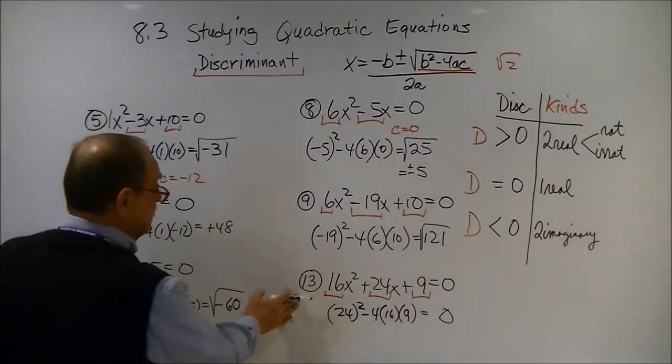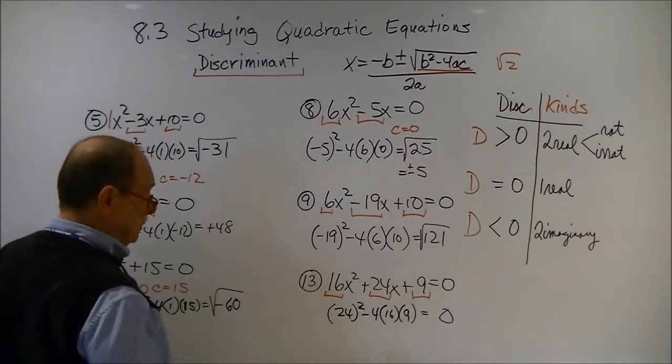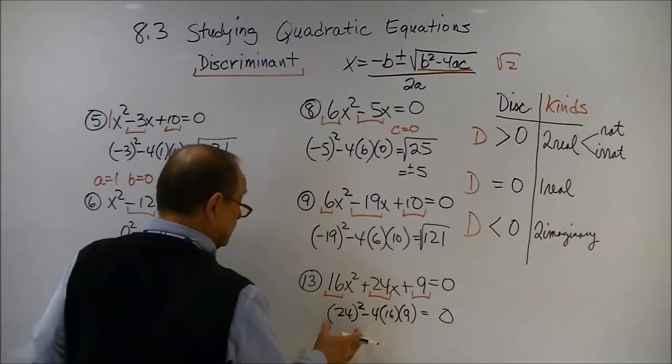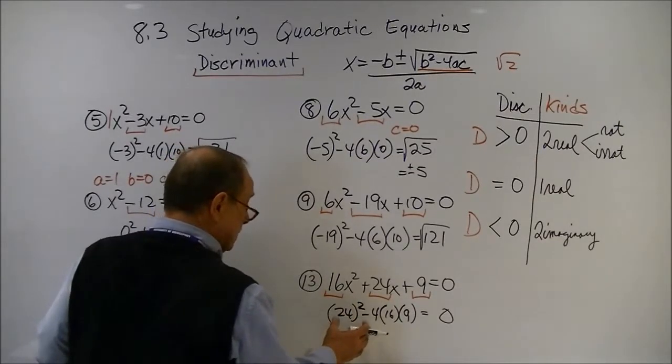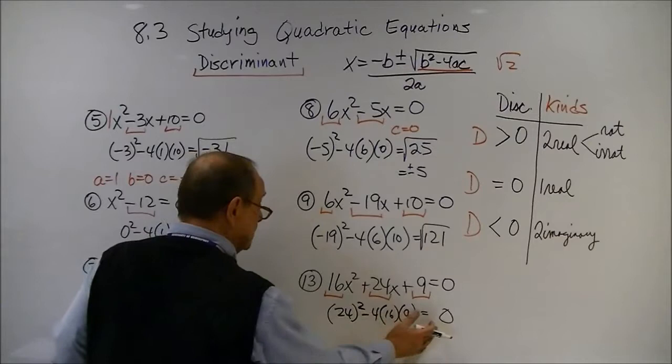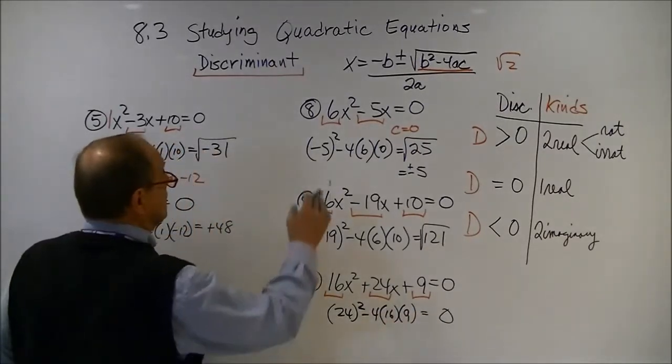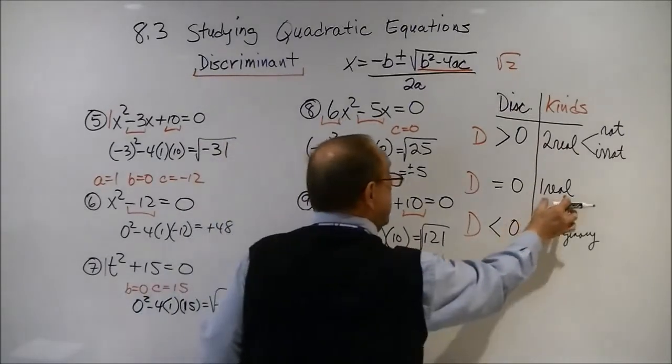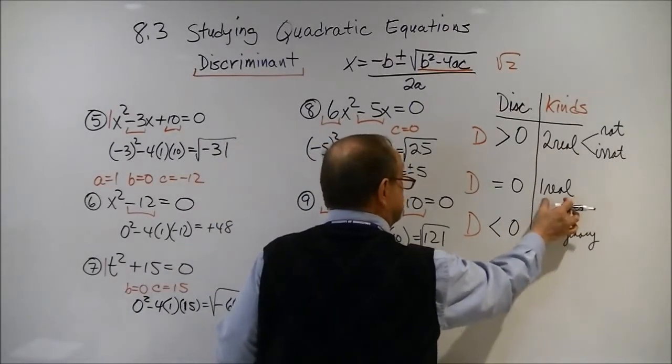And for number 13, just to give you a little bit of something, when I put that into the discriminant, the sum of my discriminant is 0. So, up here, this is 0. So, I'm only going to get one real solution.